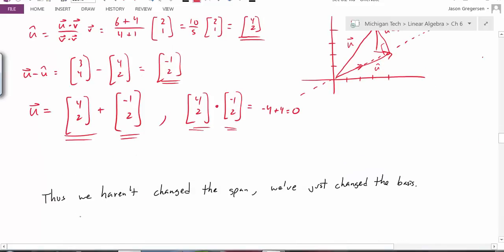We can also hear that as we found these new vectors, these new vectors, we haven't actually changed the span of the two vectors, we've just changed the basis. And so we can now generate an orthogonal basis for this space.